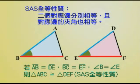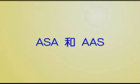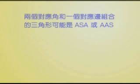SAS全等性质。接下来我们还要再介绍另外三角形全等的性质，就是ASA和AAS。ASA两个A表示有两个对应角，S表示一个对应边，所以两个对应角与一个对应边组成的三角形会全等。